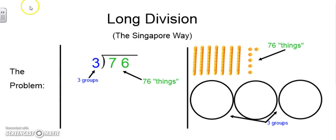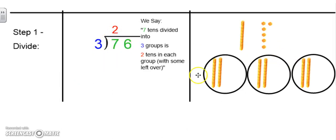So my first step is to divide. 7 tens divided into 3 groups is 2 tens in each group with some left over. So because I was able to put 2 tens into each group, I write my 2 above here.